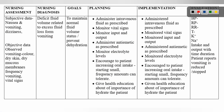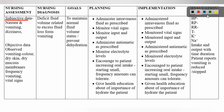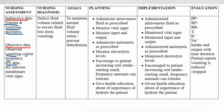Second nursing care plan assessment, subjective data: nausea, vomiting, and dizziness. Objective data: observed vomiting color and frequency, dry skin, dry mucous membranes, and vital signs.